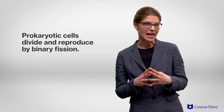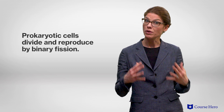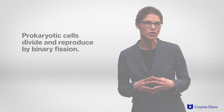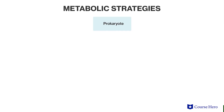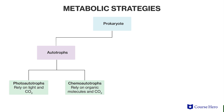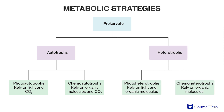Prokaryotic cells divide and therefore reproduce by binary fission. Prokaryotes as a group have diverse mechanisms for obtaining energy and carbon. Prokaryotes can be classified as either autotrophs, usually meaning they rely on carbon dioxide as a source of carbon, or heterotrophs, meaning they rely on organic compounds as a source of carbon.